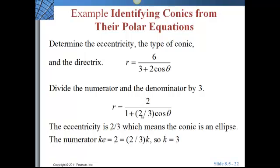The numerator is KE. KE is 2. And 2 is 2/3 times K. That's the E, E times K, 2/3 times K. So 2 equals 2/3 times K, so K has to be equal to 3. And if K is 3, the directrix is Y equals 3. So there we have the type of conic, it's an ellipse. The eccentricity is 2/3, and the directrix is Y equals 3.